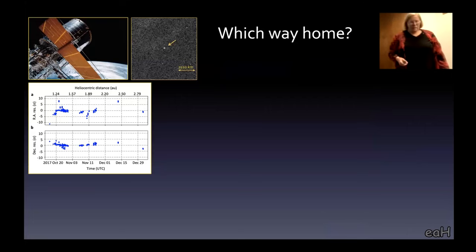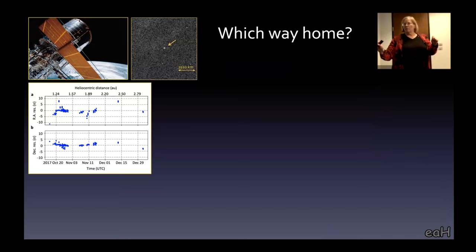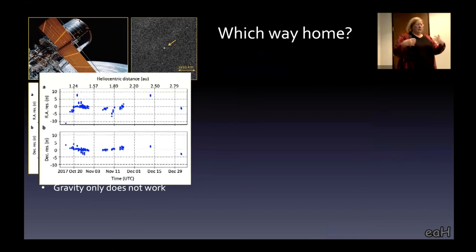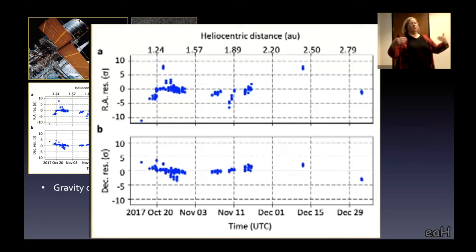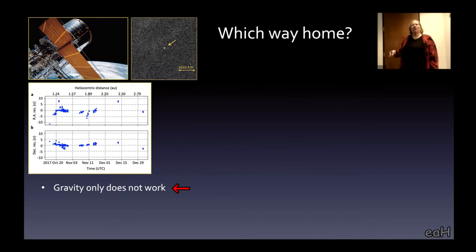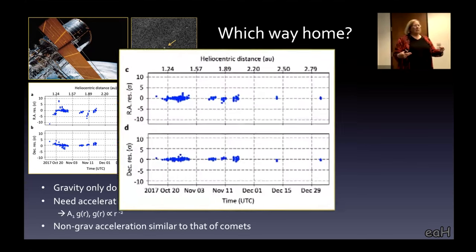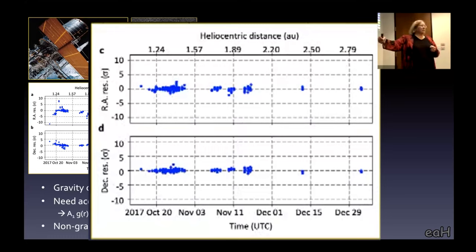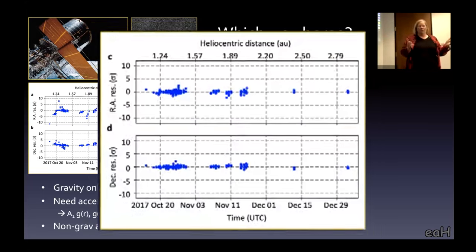Remember I said HST we wouldn't use Hubble for resolution. Why did we use Hubble? We decided that we wanted to follow its path as far as we possibly could. People on our team measured the positions very carefully, calculated the orbit, subtracted that from the data. This chart shows the residuals. Pure gravity doesn't work. We had to add an acceleration. This thing is accelerating out of our solar system.